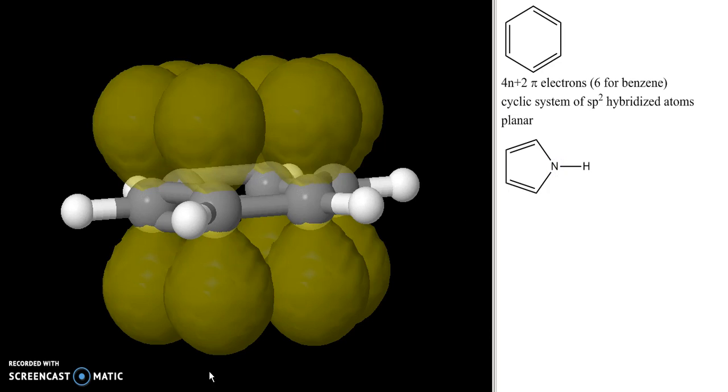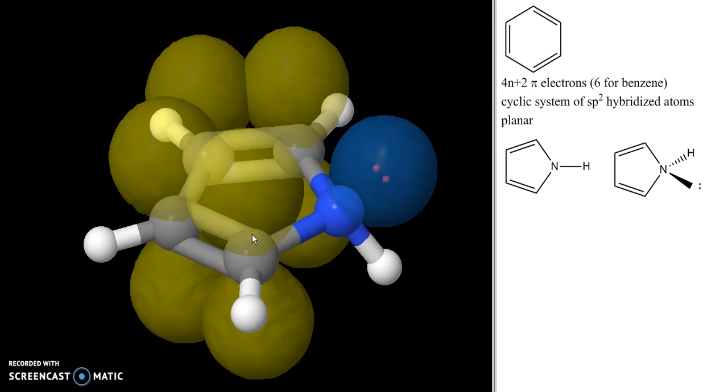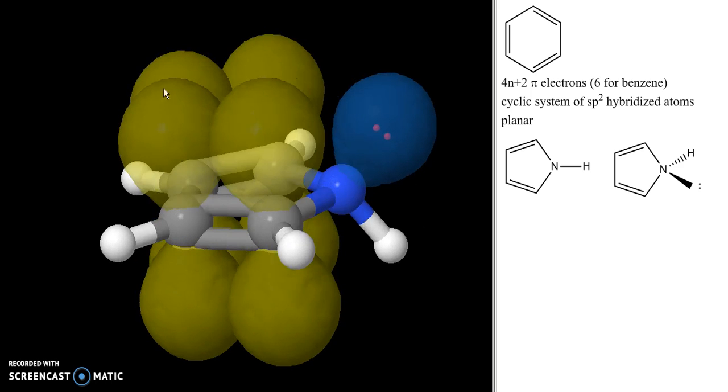So we think of pyrrole as looking like this with this sp3 hybridized nitrogen. In our 3D model of pyrrole, we think about it like this with the two pi bonds overlapping with one another, but with this sp3 hybridized nitrogen with its lone pairs in an sp3 orbital not interacting with our pi system.